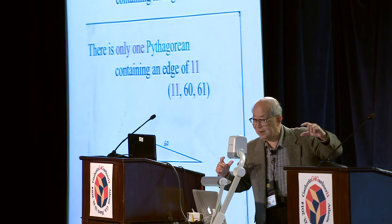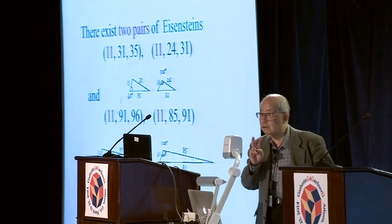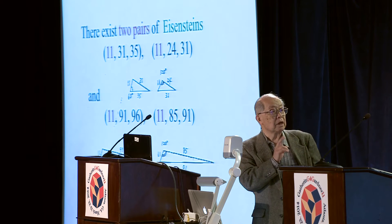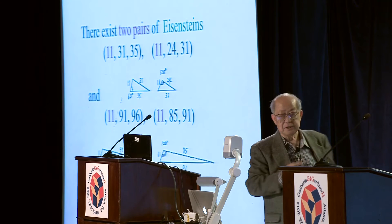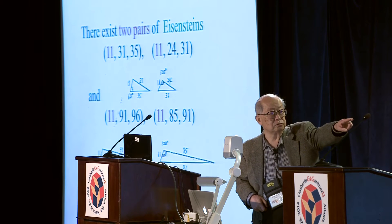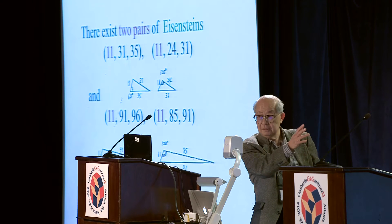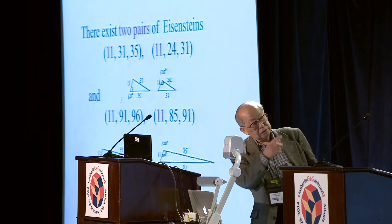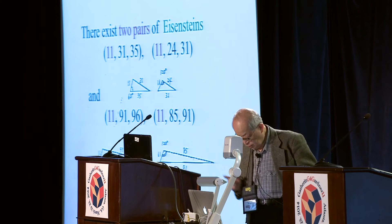It is a very, very thin triangle, but this is unique. And there are two pairs of Eisenstein triangles drawn there. You can see the 60-degree angle and the 120-degree angle.